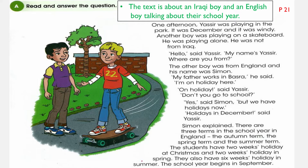'My father works in Basra,' he said. 'I am on holiday here' — meaning he is on holiday now. 'On holiday?' said Yasr in surprise, 'You're on holiday? Don't you go to school?' 'Yes,' said Simon, 'but we have holidays now.' 'Holidays in December?' said Yasr in surprise — because in December we have school.